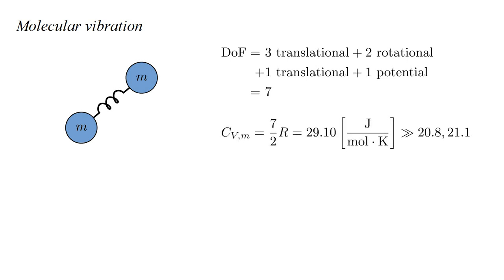So our total number of degrees of freedom is now seven. This predicts a molar heat capacity of 29.1, which is much larger than the observed nitrogen and oxygen values. But now we can explain a reduction in the predicted value using quantum mechanics. At room temperature, the additional two degrees of vibrational freedom might be completely frozen for nitrogen, and almost, but not completely, for oxygen.